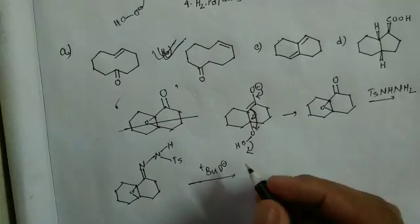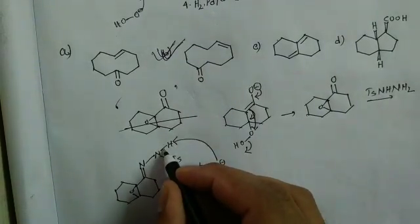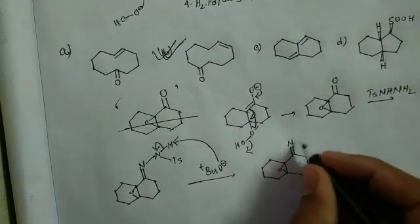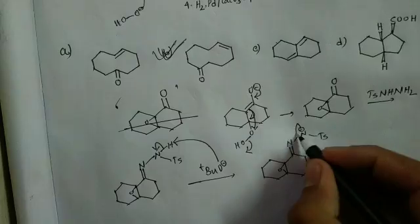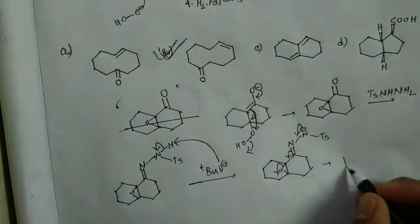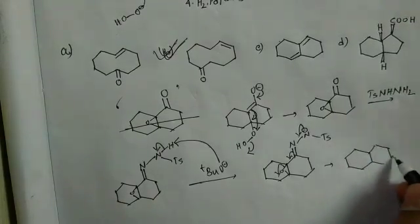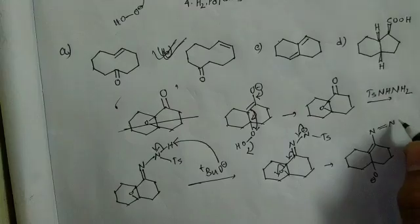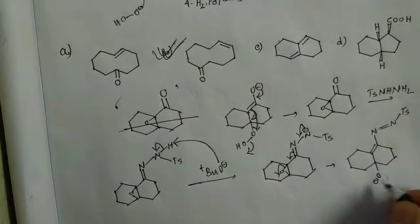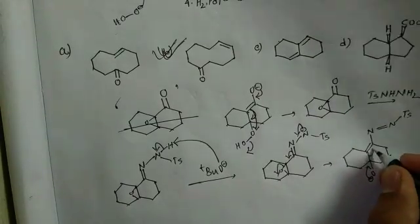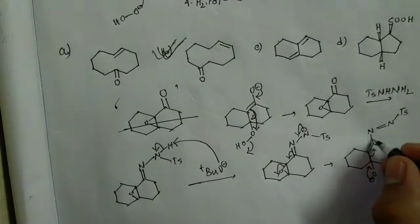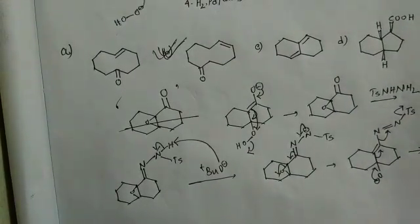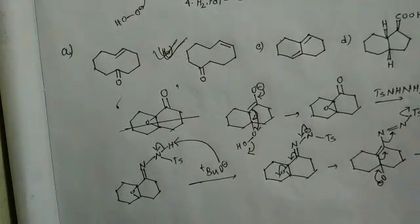In the next step, tert-butoxide anion from potassium tert-butoxide removes the acidic proton from the hydrazone nitrogen to generate an anion. This nitrogen anion pushes electron density, the epoxide opens, and the oxygen becomes O⁻. The oxygen lone pair then pushes electrons, breaking the C-C sigma bond in a concerted process. The tosyl group leaves, generating a keto group on one side.